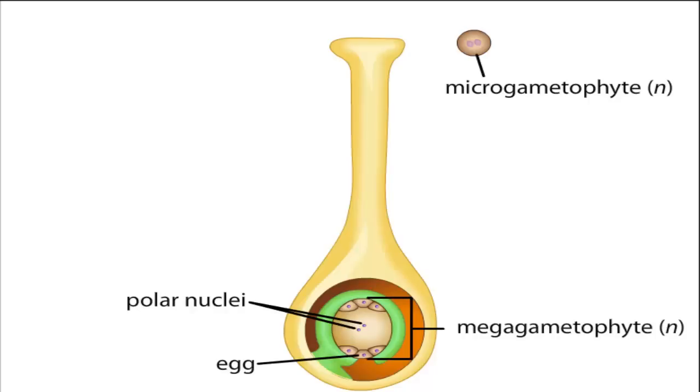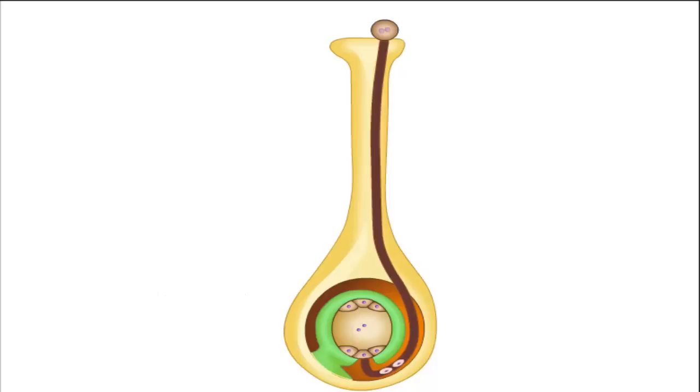The pollen grain pollinates the female parts of the flower by landing on the stigma. Here, the pollen grain germinates and a pollen tube grows down the style until it meets the female gametophyte. Two sperm from the pollen grain travel through the pollen tube and enter the female gametophyte.